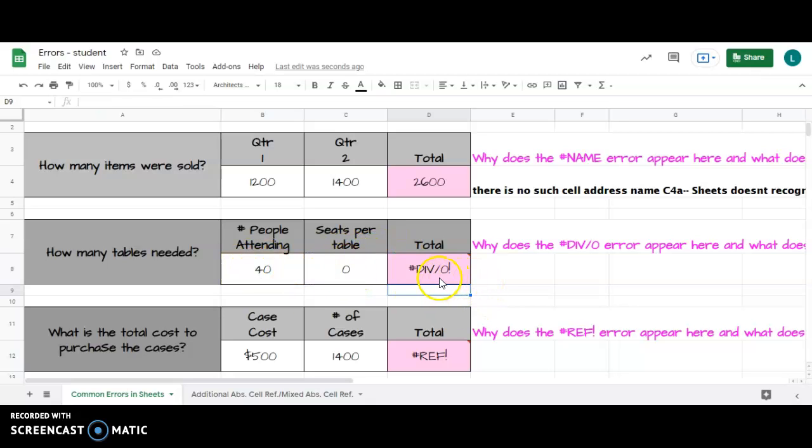So if I just change this to five, eight times five is 40. 40 people attending divided by five seats per table gives me eight tables.